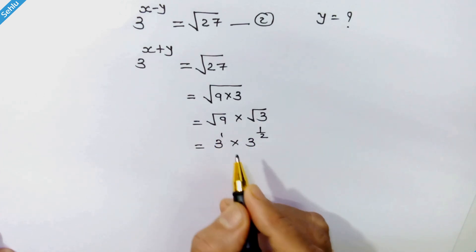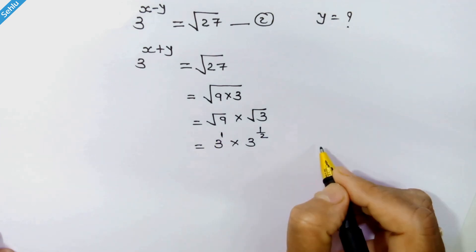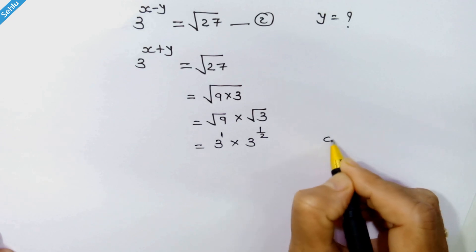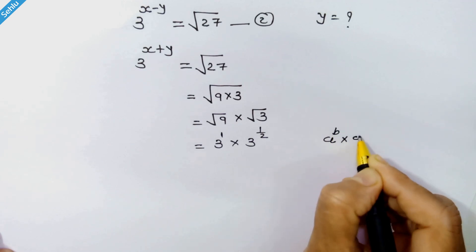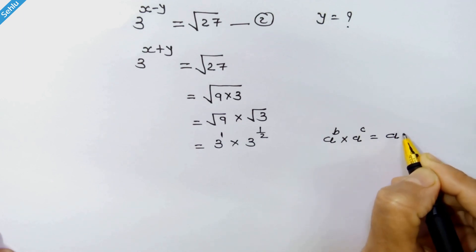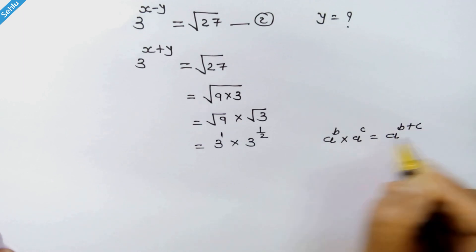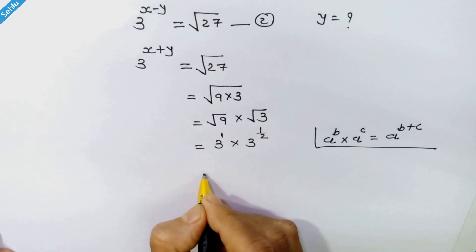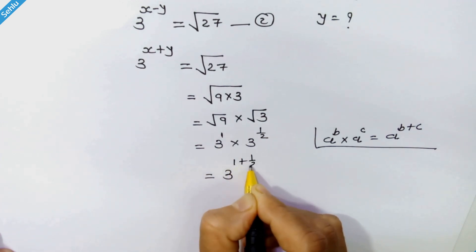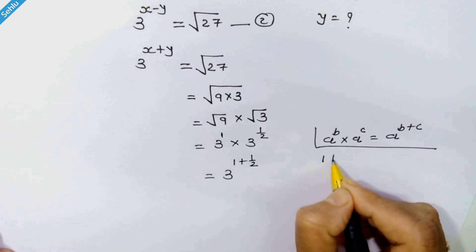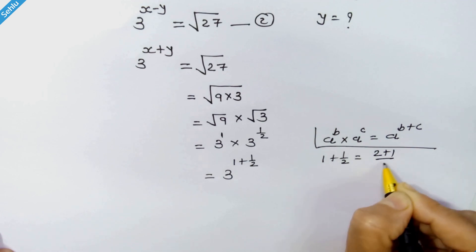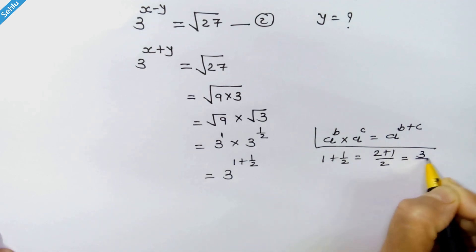Here, 1 is the default exponent. Recalling the rule: a raised to b into a raised to c can be written as a raised to b plus c. So here we can write it as 3 raised to 1 plus 1 upon 2. And 1 plus 1 upon 2 is equal to 2 plus 1 upon 2, which equals 3 upon 2.